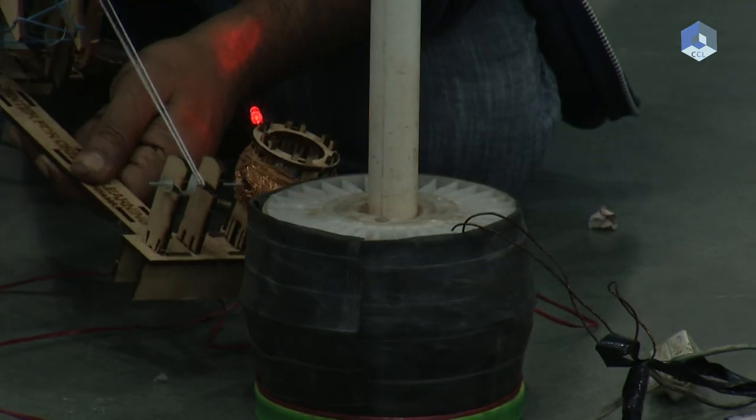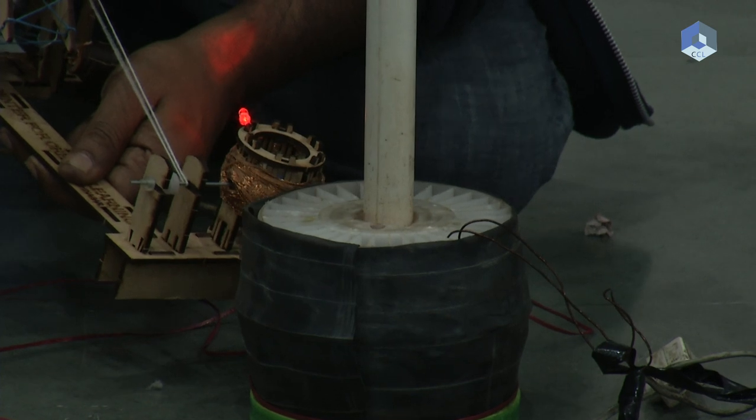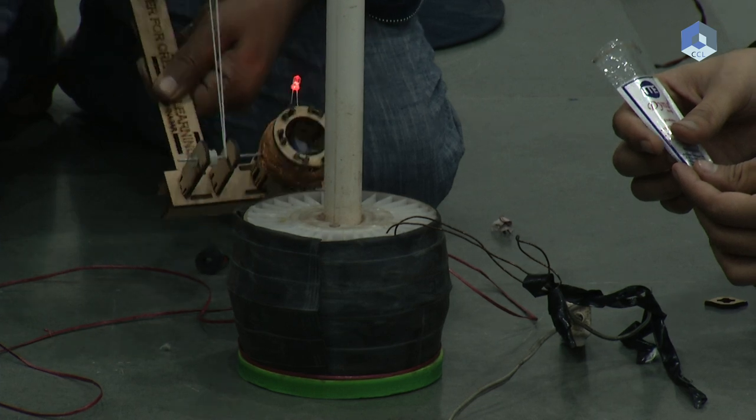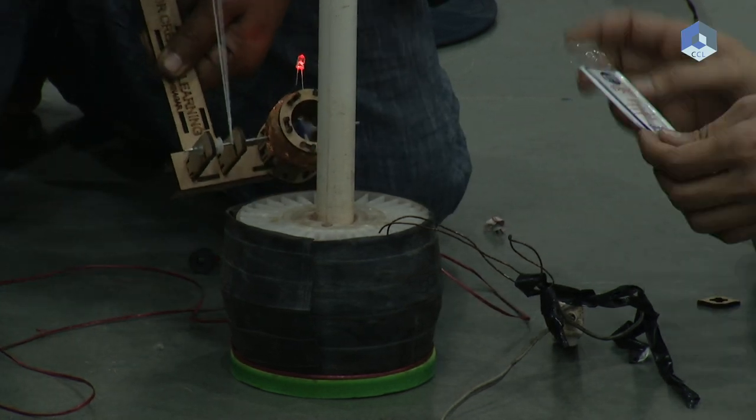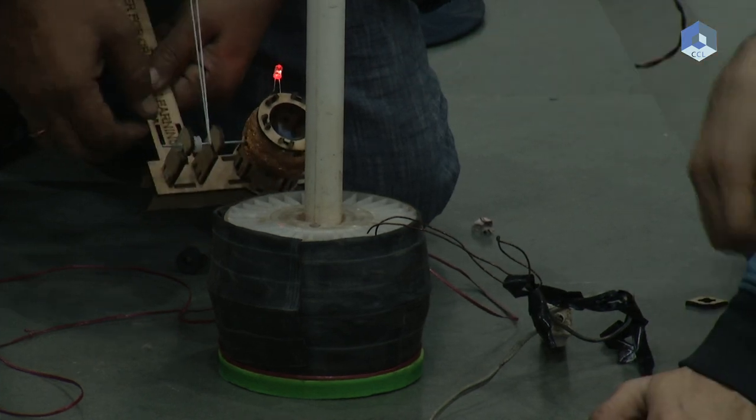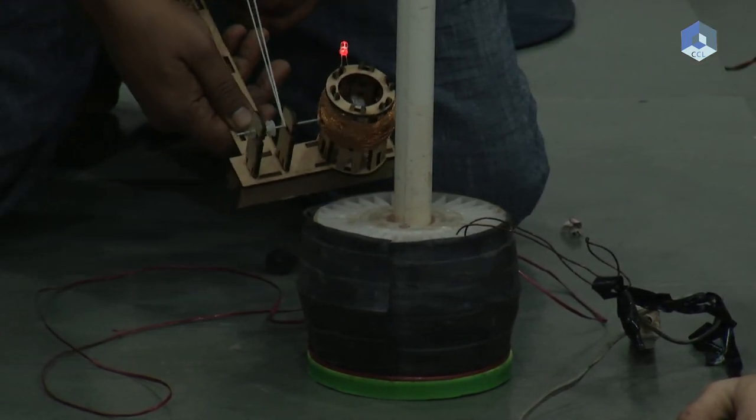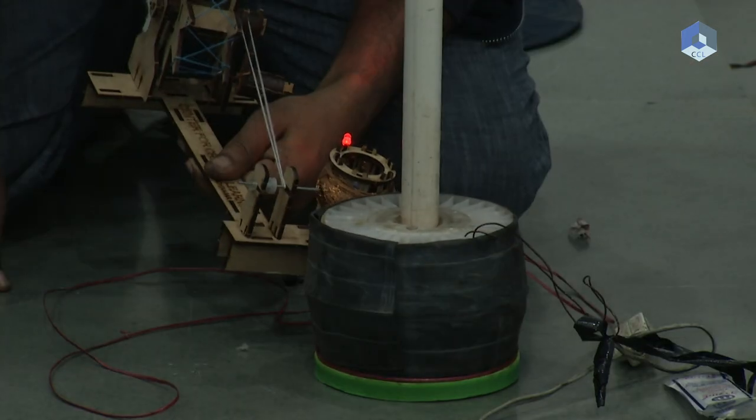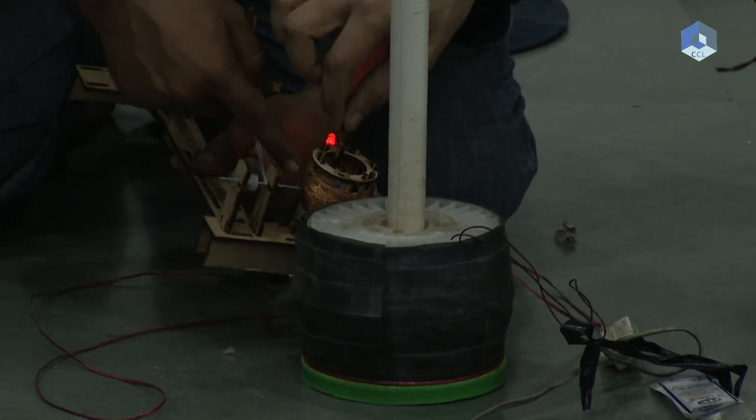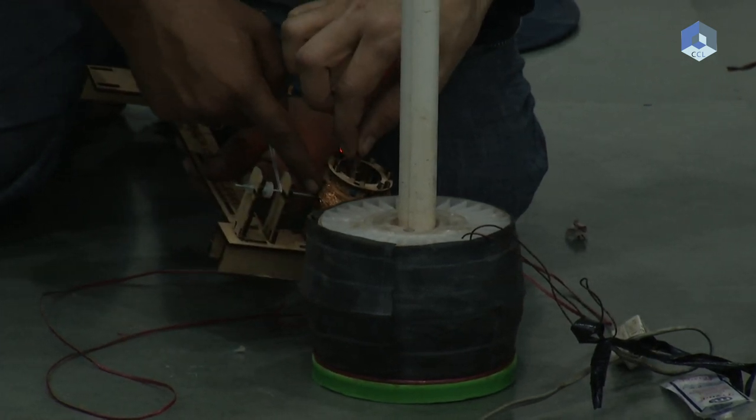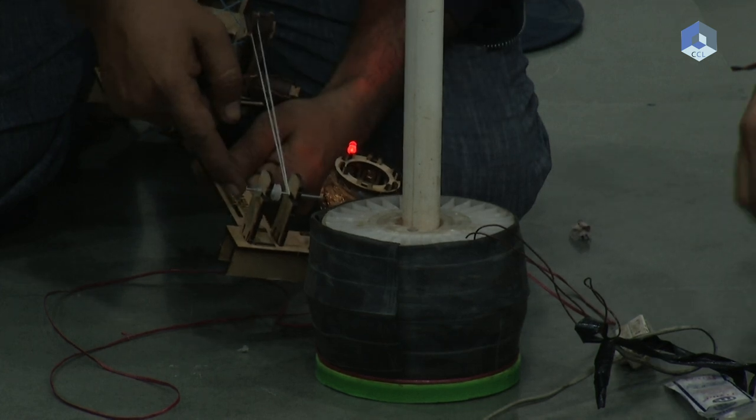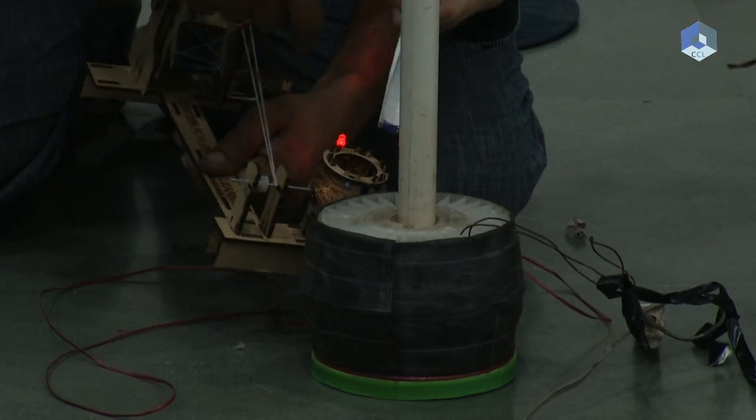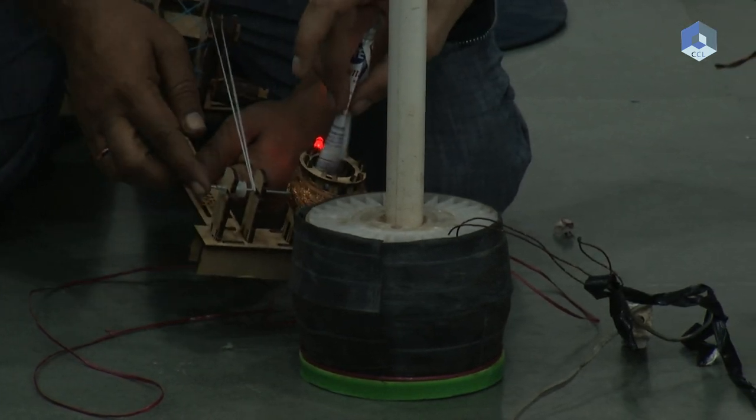This is one of very interesting experiments. The operator has different features. Current se is coil ke, current se is coil mein bhi current generate ho raha hai, and this magnet is very high and 50 hertz, so this current is also, and this current is EMF generated here, this is.